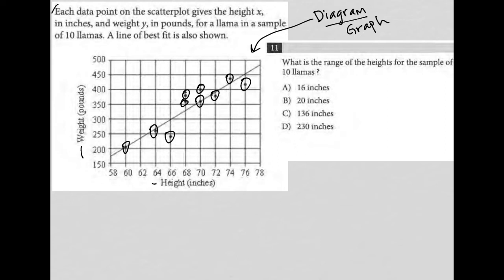The information here says each data point on the scatter plot gives the height x in inches and weight y in pounds for a llama in a sample of 10 llamas. A line of best fit is also shown. So we understood all that. I didn't know those points were llamas, but it doesn't really change the height versus weight thing.